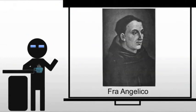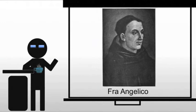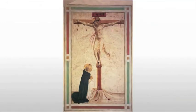Not everyone in 15th century Florence is going to be interested in humanism — they're not all trying to bring ancient knowledge into modern times. For example, we have Fra Angelico, who is a Dominican monk at San Marco. In the late 1430s, the abbot of the Dominican monastery of San Marco in Florence asked Fra Angelico to produce a series of frescoes for the order's Florentine compound.